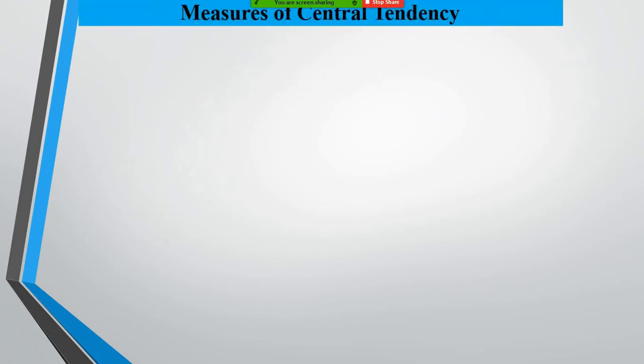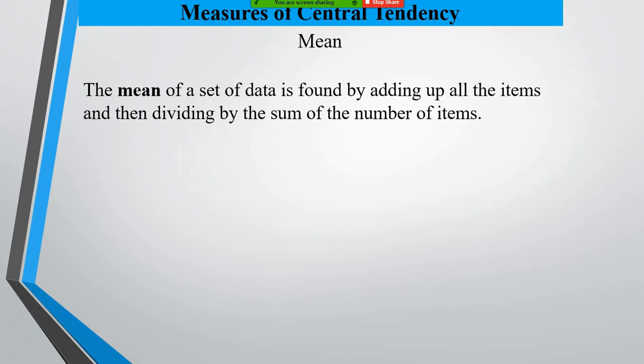The first measure of central tendency that we look into is the mean. The mean of a data set is found by adding up all the items and then dividing by the sum of the number of items.